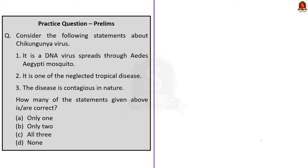Now we have come to the Prelims Practice Question discussion. Look at the first question, which is about Chikungunya virus. Statement 1 says it is a DNA virus which spreads through Aedes aegypti mosquito — this is partially incorrect because it is an RNA virus. Statement 2 says it is one of the neglected tropical diseases — this statement is correct. Statement 3 says it is contagious in nature — this is incorrect because Chikungunya is not contagious. So the correct option is A, only one statement is correct.